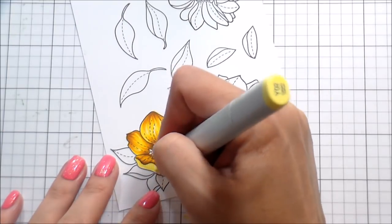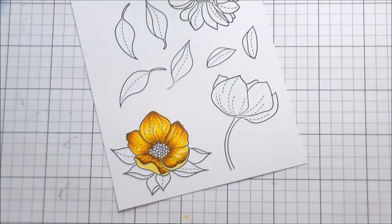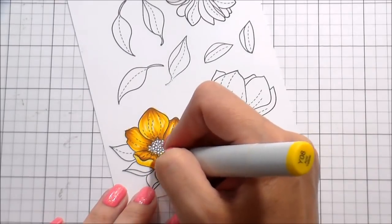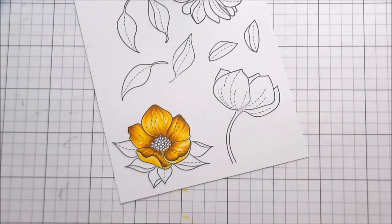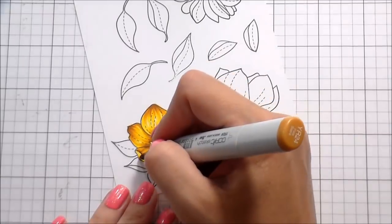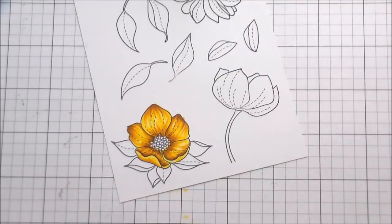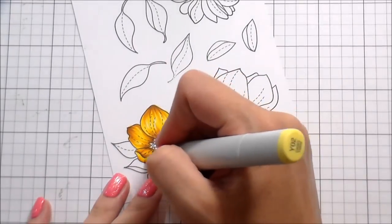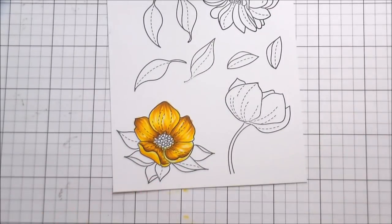The key to this particular color combination with using those browns as the shadow colors and still making it look yellow is, even though the colors are darker, when you're doing your Y08 or your Y02, still go over those darker colors. Copics are transparent, so it's going to add some brightness and help to soften out that brown color.